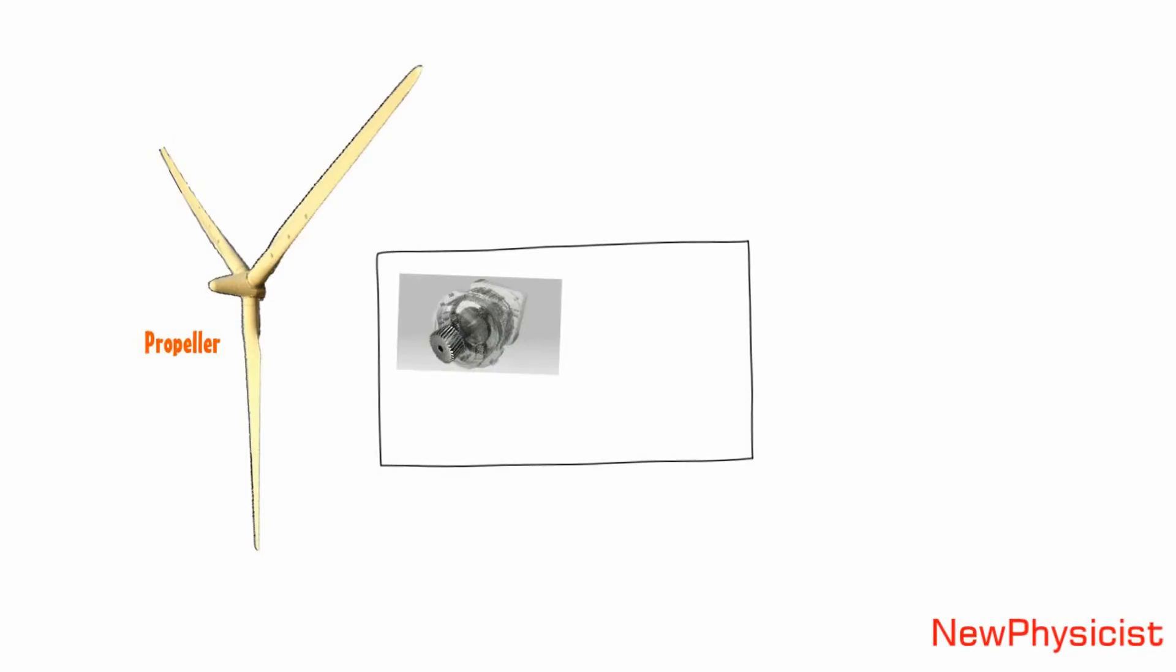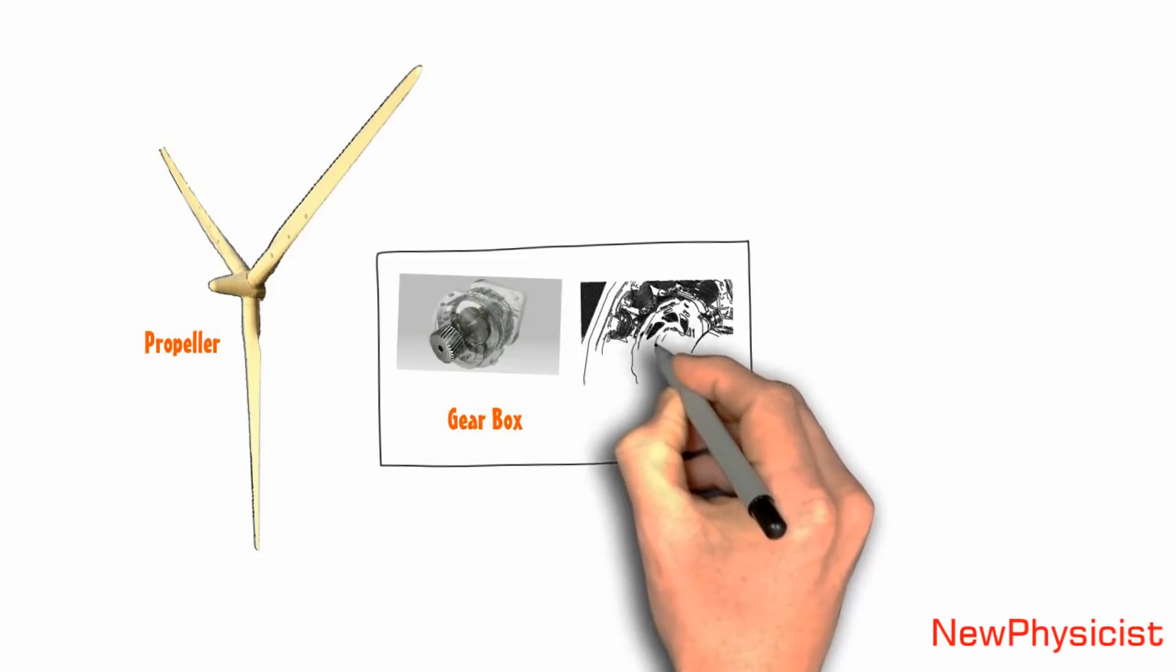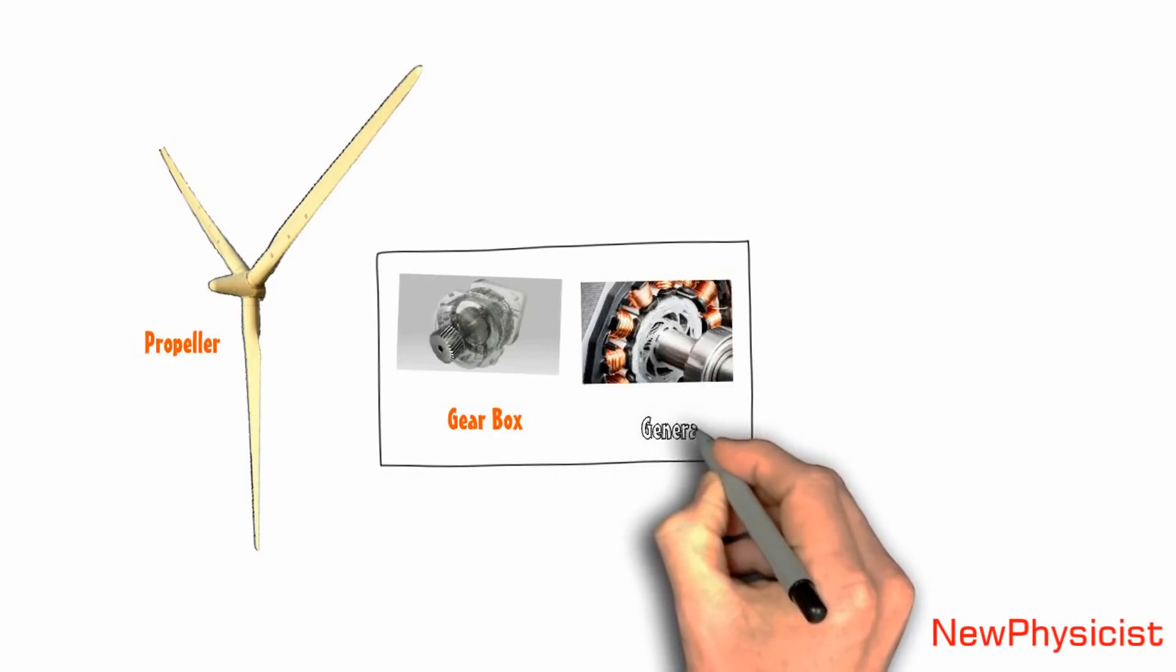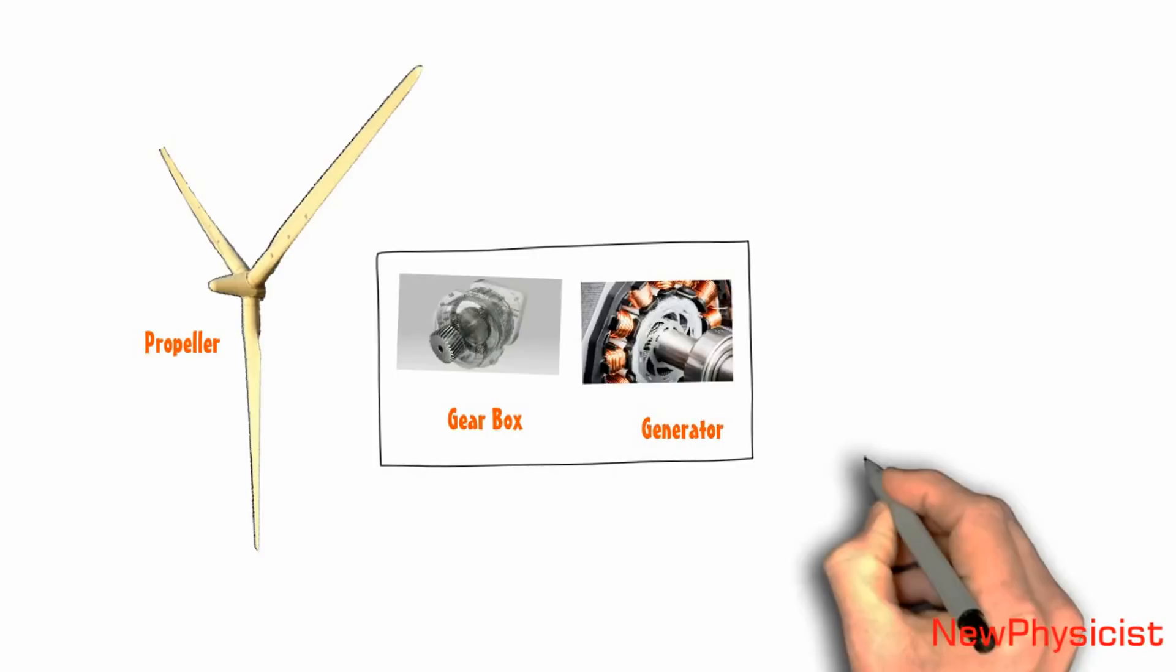But this rotation speed is not enough to generate a substantial amount of electricity from the dynamo. That's why we use a gearbox in between the propeller and dynamo to multiply rotation speed. Higher the speed of the rotation, higher will be the output.